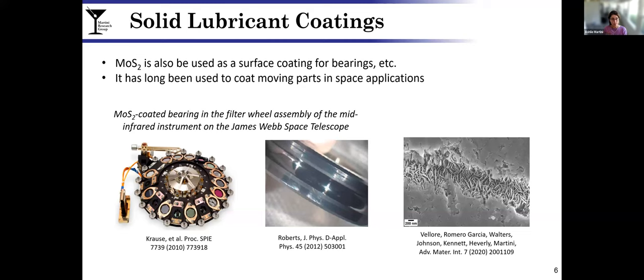MoS2 is also used as a solid lubricant or surface coating for mechanical components like bearings in applications where liquid lubricants are not possible. For example, too hot, too cold, vacuum, corrosive, etc. One of the prototypical situations for solid lubricants is outer space. Shown here on the left is a component from the James Webb Space Telescope and a bearing on that telescope that has an MoS2 coating.